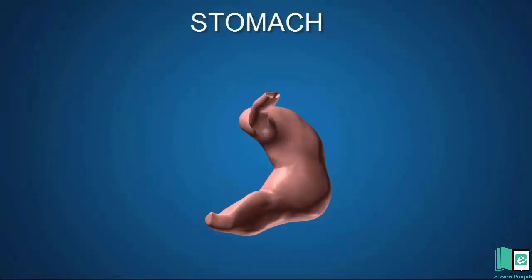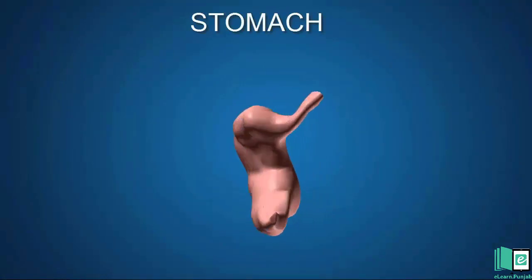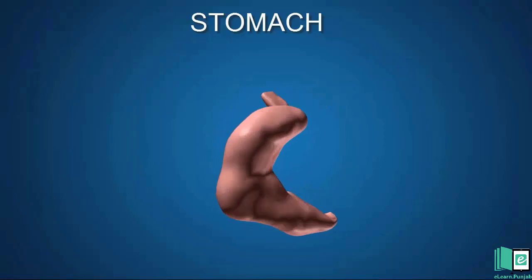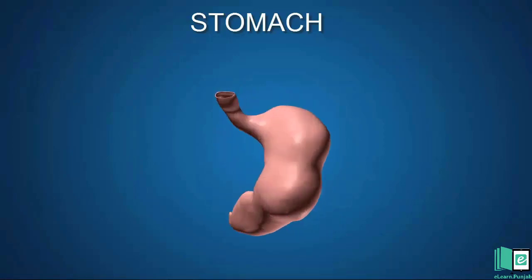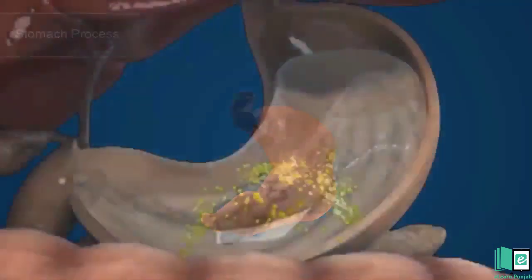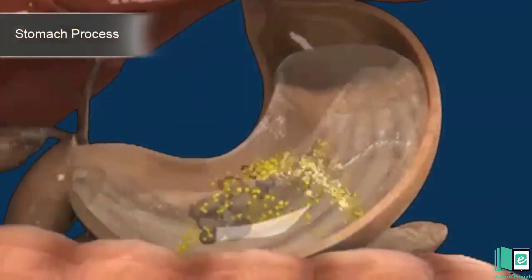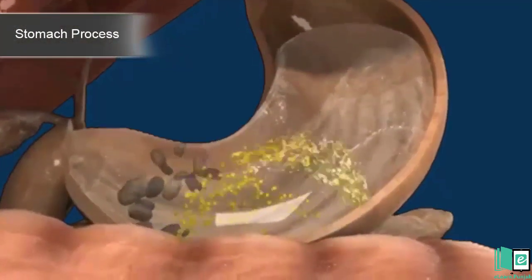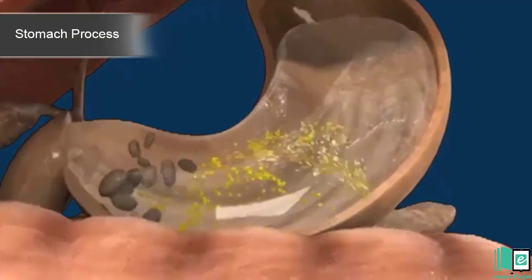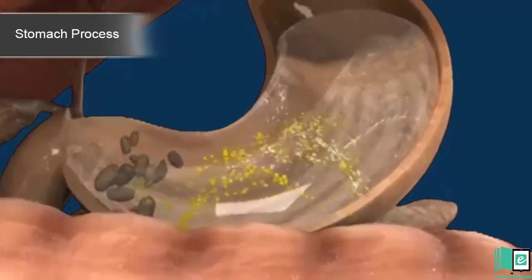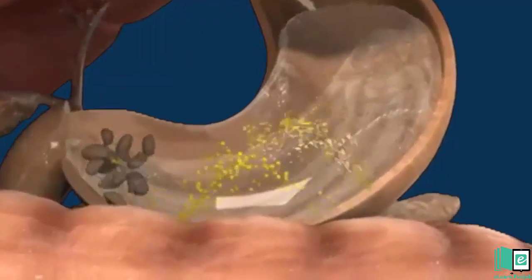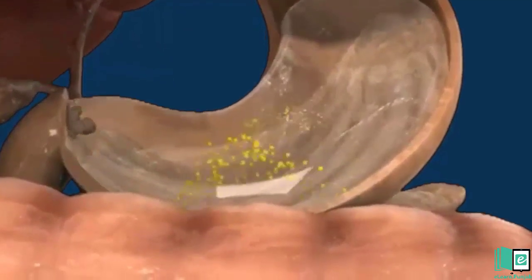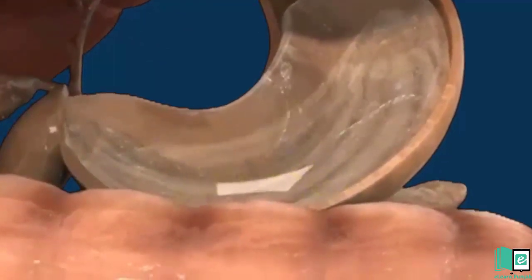Our stomach is a large J-shaped muscular bag. It mixes the food with digestive juice. The digestive juice begins the digestion of proteins such as meat, egg, milk, pulses, etc. The food spends about 4 hours in the stomach. The digestive juice in the stomach also contains an acid, which kills the germs present in our food and helps in the digestion of proteins.